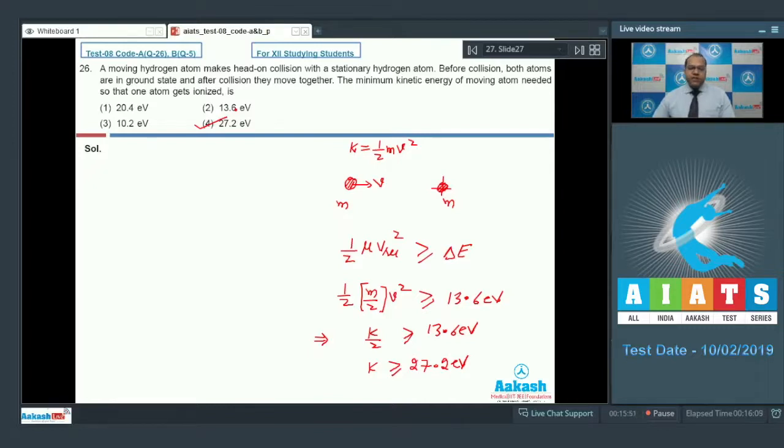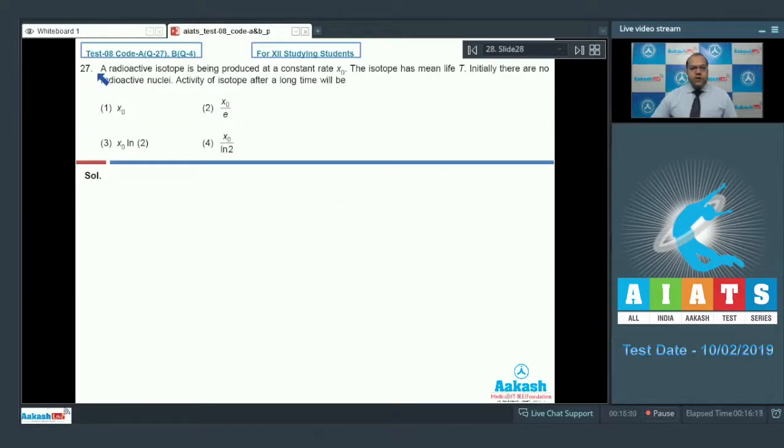Let's move to question number 27. In question number 27, a radioactive isotope is being produced at a constant rate X0. The isotope has a mean life T. Initially, there are no radioactive nuclei. Activity of isotope after a long time will be.